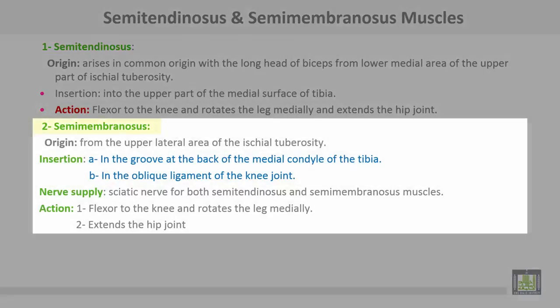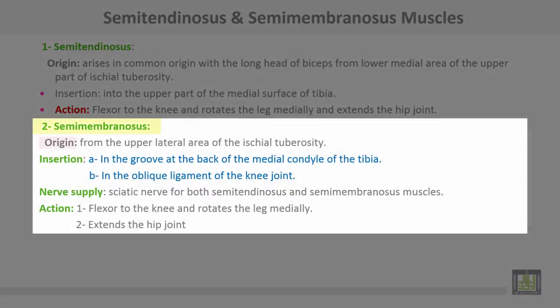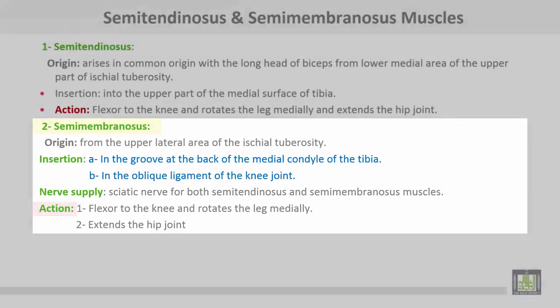Semimembranosus muscle takes origin from the upper lateral area of the ischial tuberosity. Insertion in the groove at the back of the medial condyle of the tibia, and also into the oblique ligament of the knee joint. Nerve supply from the sciatic nerve for both semitendinosus and semimembranosus. Action: flexor of the knee, medially rotates the leg, and extends the hip joint.